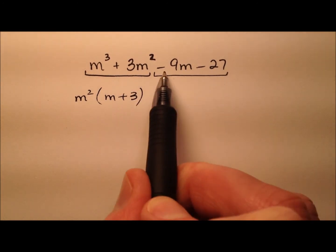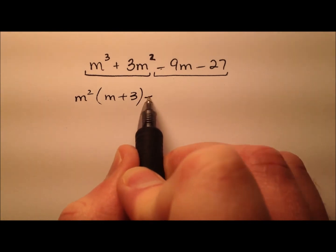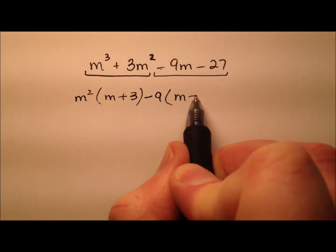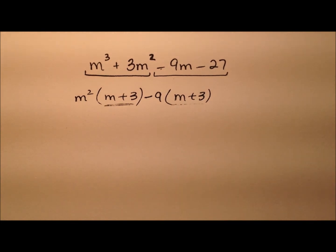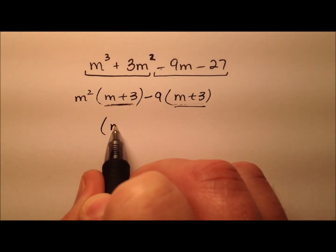And from the second pair, it looks like we can factor a negative 9 out, and I'll be left with again m plus 3. So since these leftovers are the same, I can factor them out.